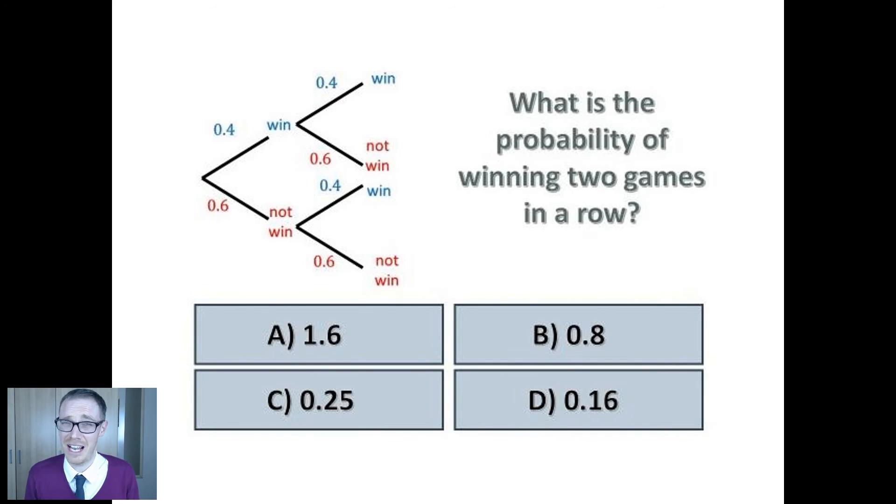What about this? I love a tree diagram. What is the probability of winning two games in a row? Now again if my maths is right I think the correct answer to this is D, 0.16. But what do each of the other wrong answers reveal to you about the student's understanding of this topic? And this is where it gets really interesting.